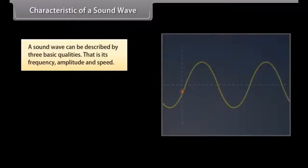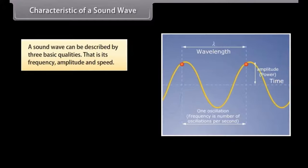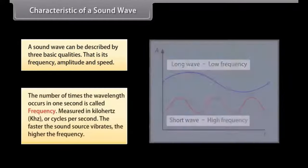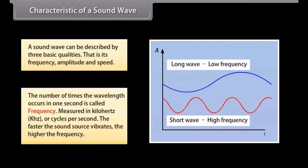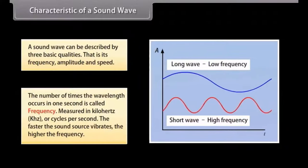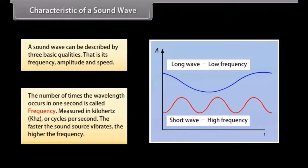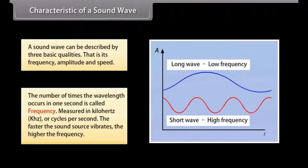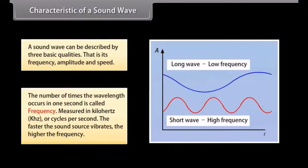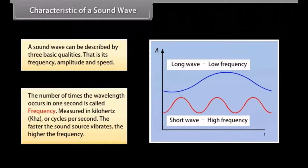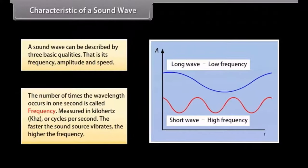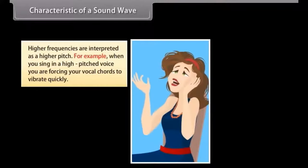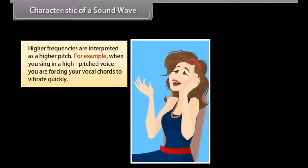Characteristics of a sound wave. A sound wave can be described by three basic qualities i.e. its frequency, amplitude and speed. The number of times the wavelength occurs in one second is called frequency. It is measured in kilohertz or cycles per second. The faster the sound source vibrates, the higher the frequency.